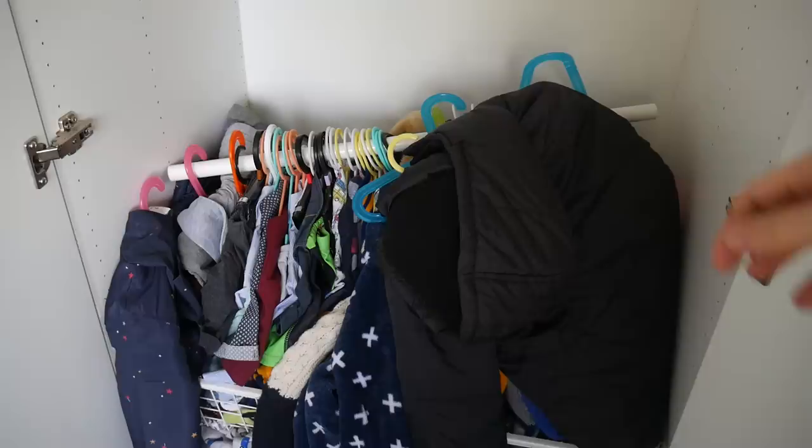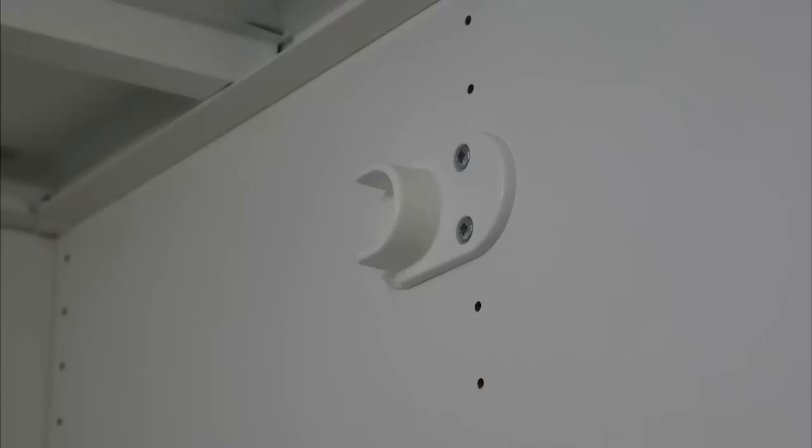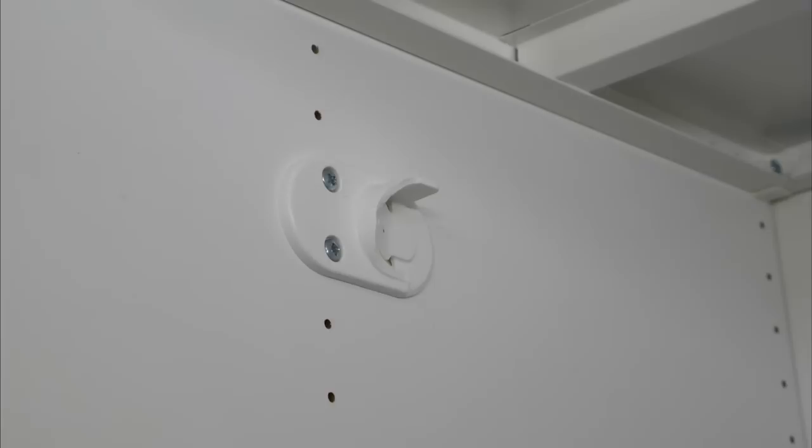Let's start with a summary of the problem. One day we opened my son's wardrobe and the rail had fallen down, along with all of the clothes that were meant to be hanging up. Looking above, we could see that the retaining clip on one side looked exactly as it should, but on the other side, not so much.